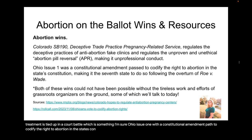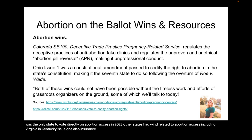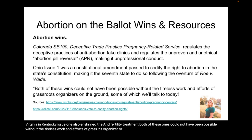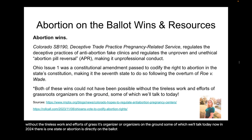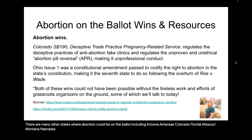Colorado Senate Bill 190, called Deceptive Trade Practice Pregnancy Related Service, regulates the deceptive practices of anti-abortion fake clinics and regulates the unproven and unethical abortion pill reversal, called APR, making it unprofessional conduct. Colorado was the first state in the country to make abortion pill reversal treatment unprofessional conduct. This monumental bill is tied up in a court battle. Ohio Issue One was a constitutional amendment passed to codify the right to abortion in the state's constitution, making it the seventh state to do so following the overturn of Roe. Issue One also enshrined the right to make decisions about birth control, miscarriage care, and fertility treatment. Both of these wins could not have been possible without the tireless work of grassroots organizers on the ground.